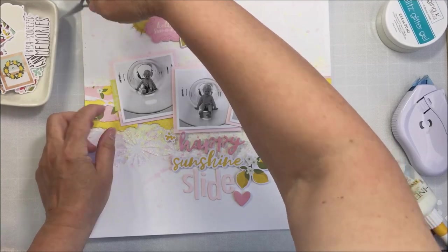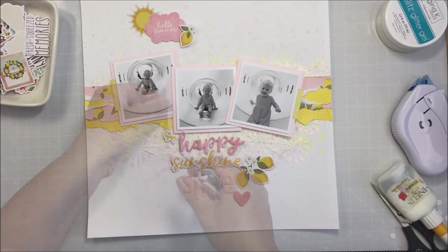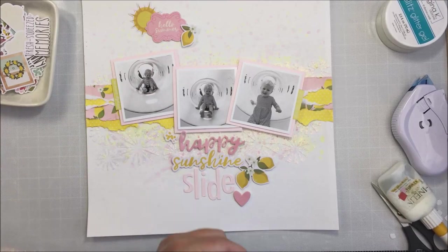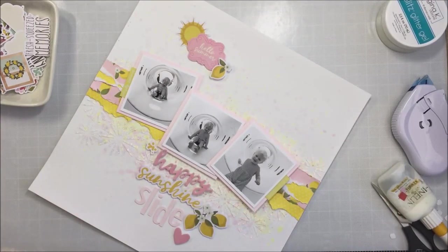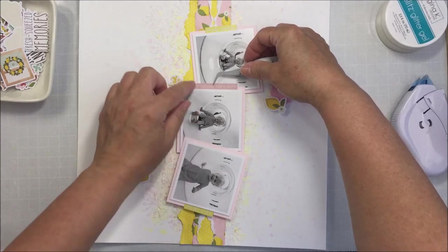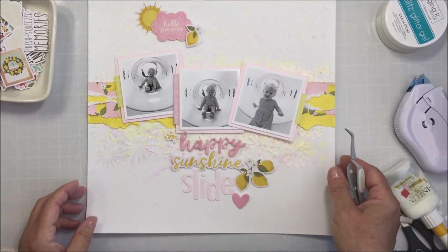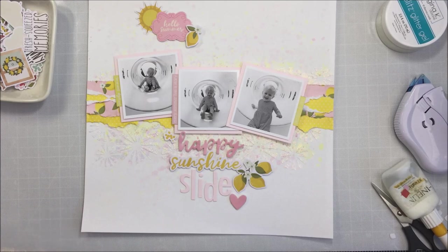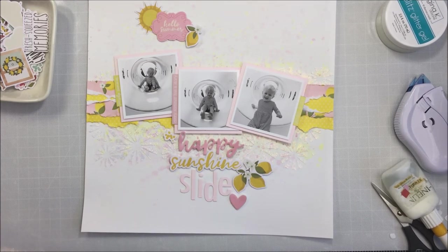On the side of each one of the photos has a little phrase sticker. One says a bit of sunshine, one says every summer has a story, and the other one says simply summer I think or something like that. They're so sweet, I love those. I love those 12 by 12 simple story sticker sheets, they're one of my favorite things about the simple stories collection.